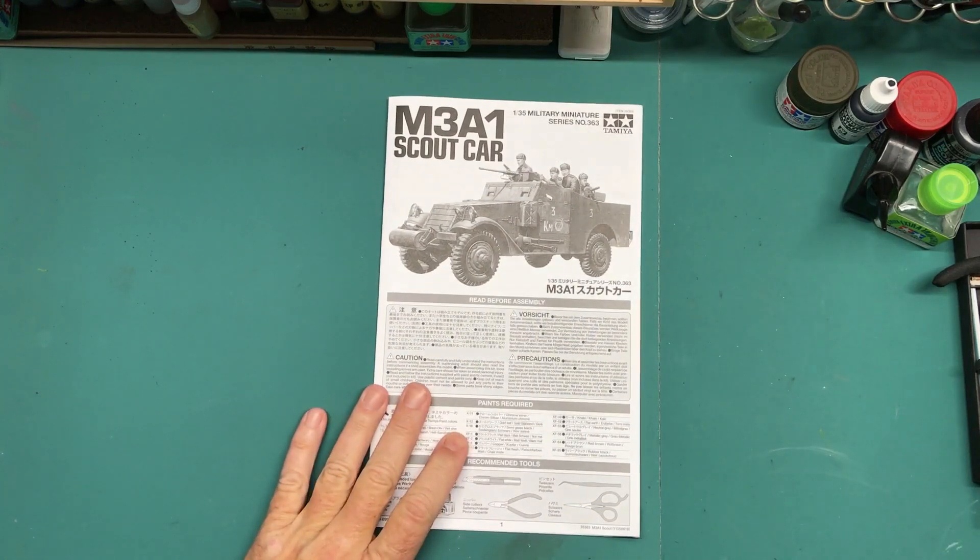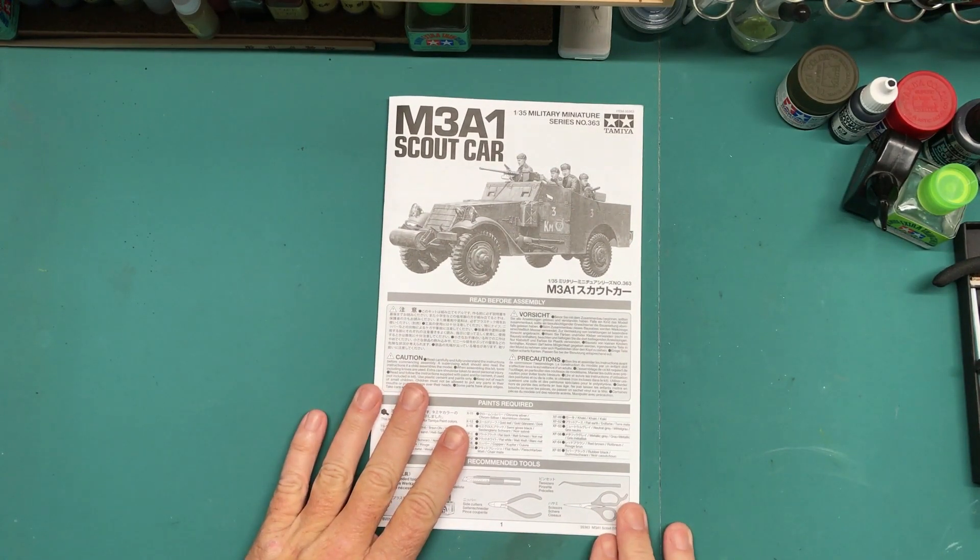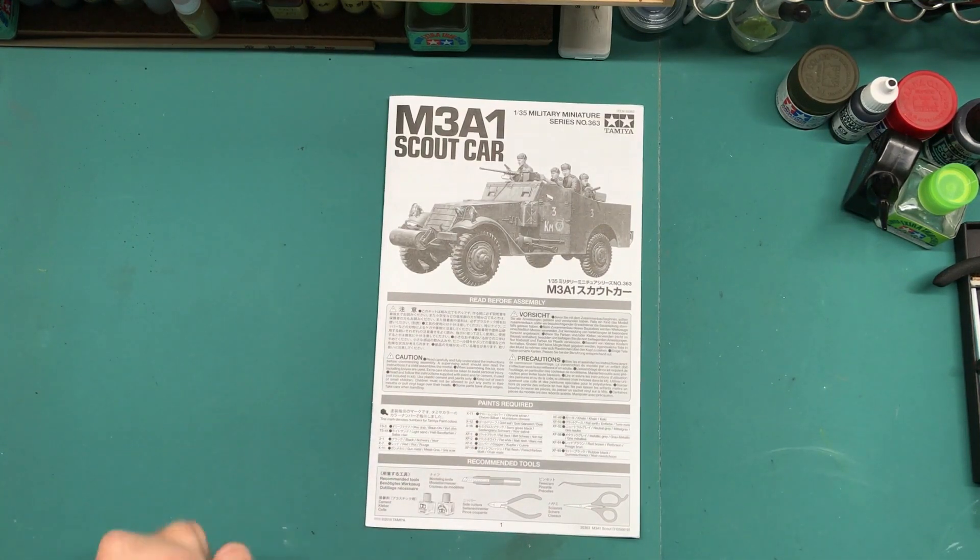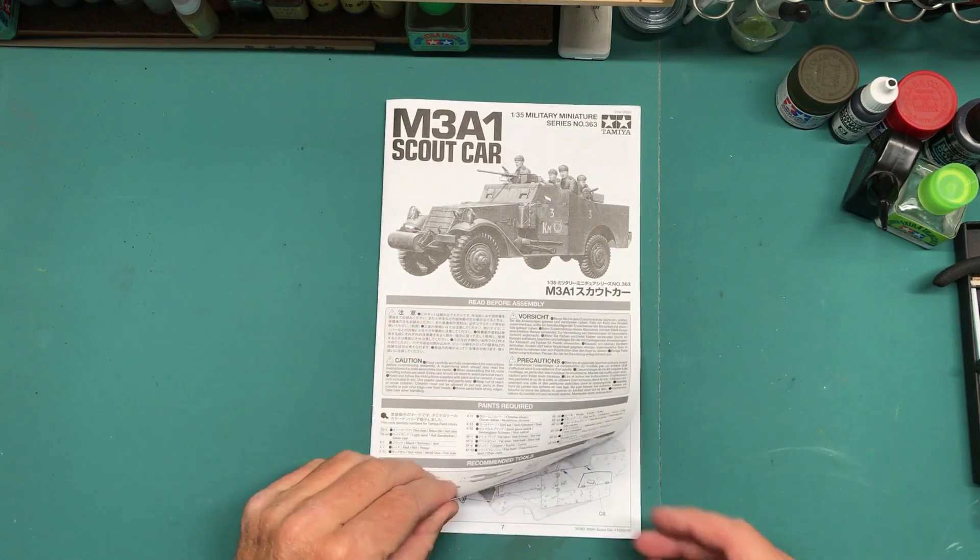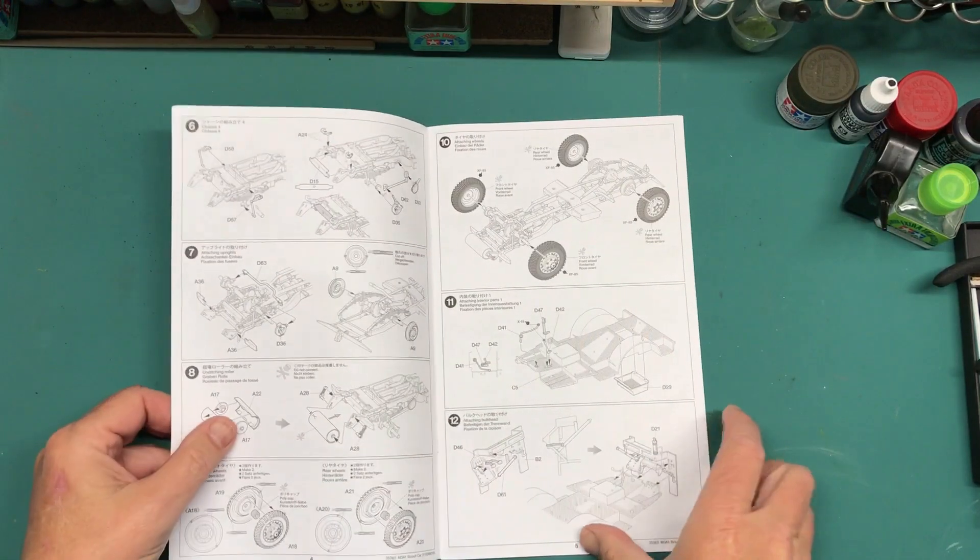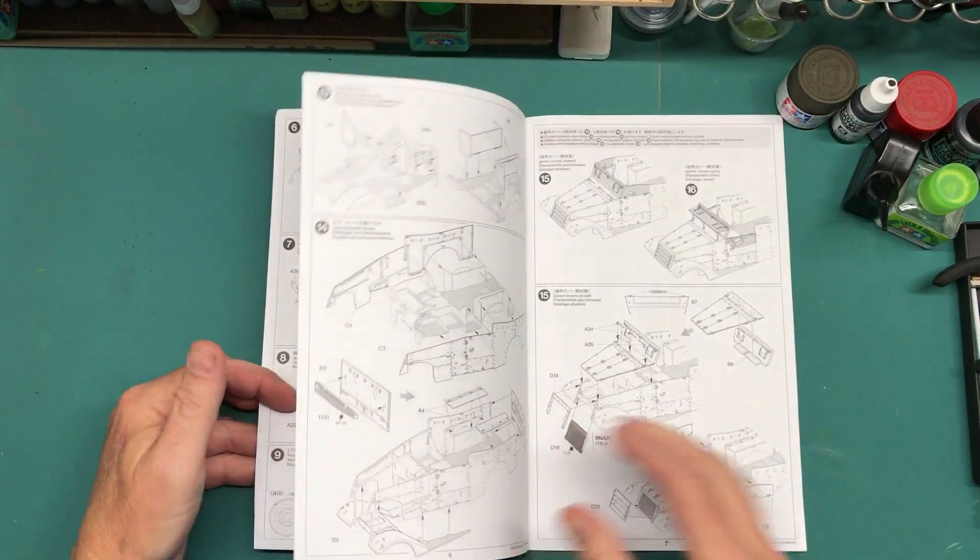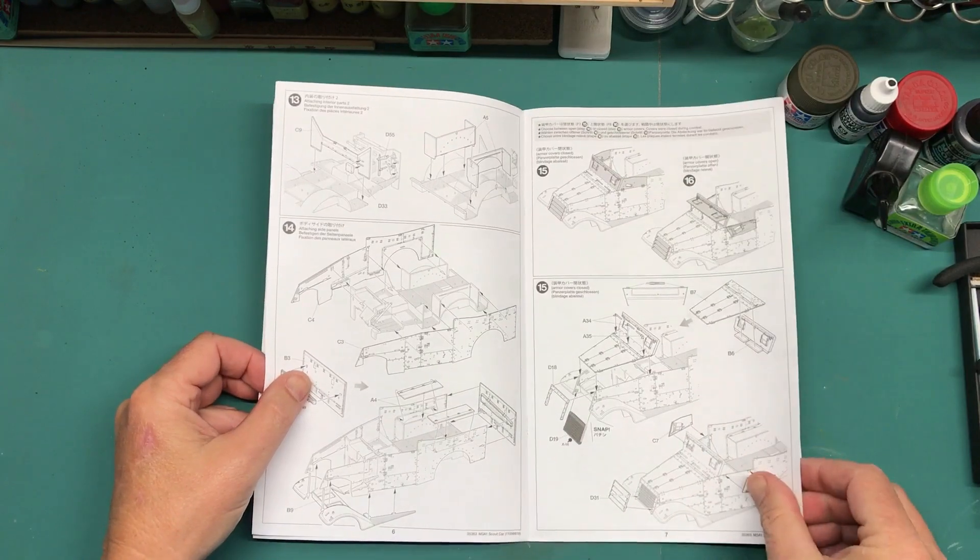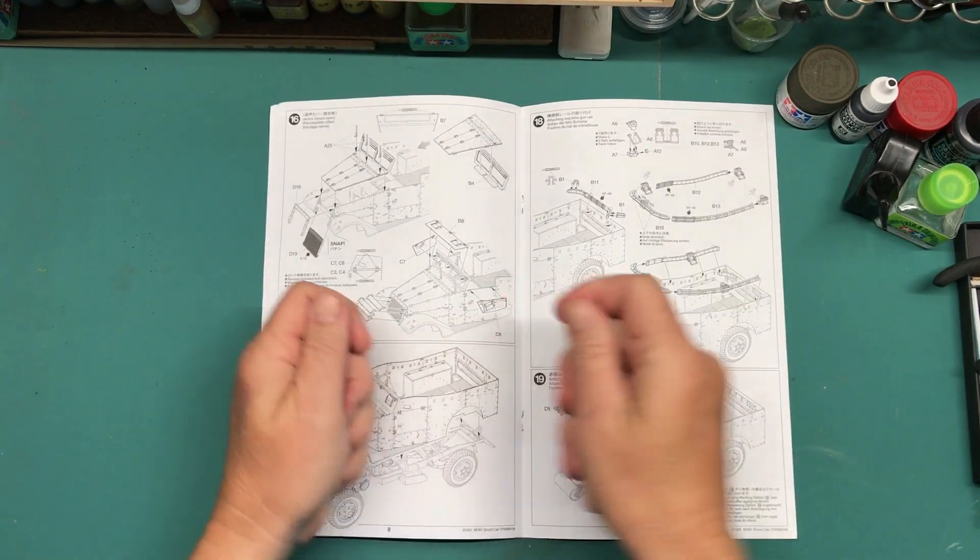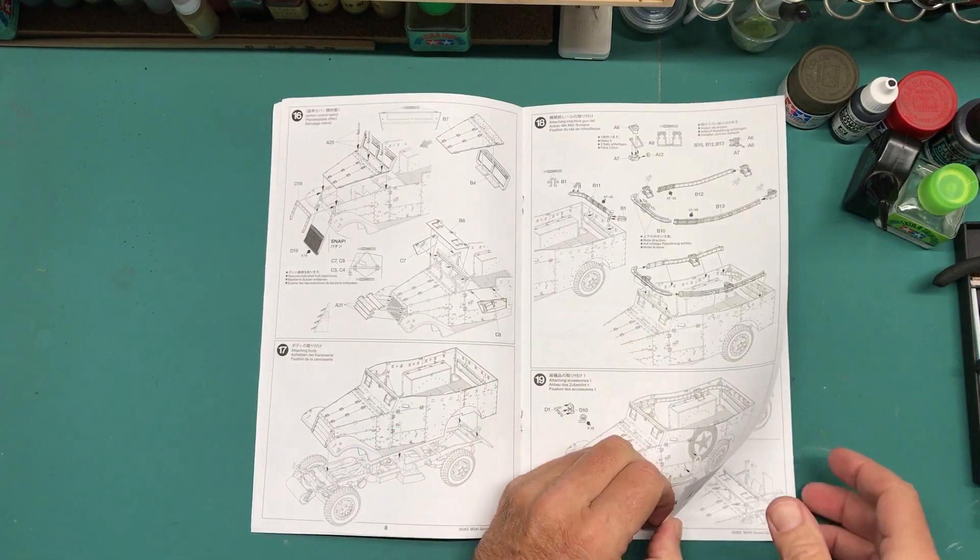So let me talk real quick about the kit itself and then what tools and supplies I'm going to be using to just do the basic build and get up to the point where it's ready for weathering. First thing is the instructions, basically the booklet type instructions that Tamiya provides nowadays, which is kind of nice, instead of the old map fold out that can be a real pain.